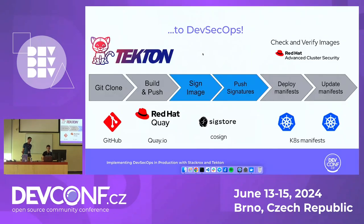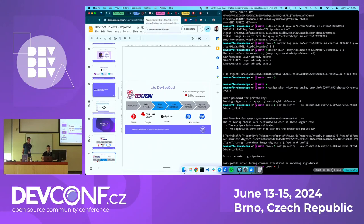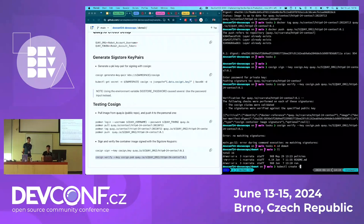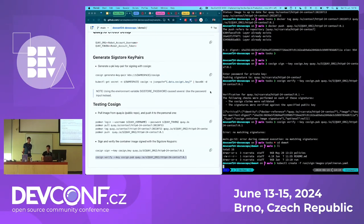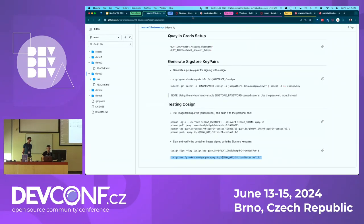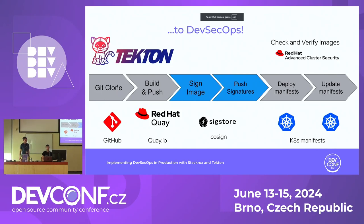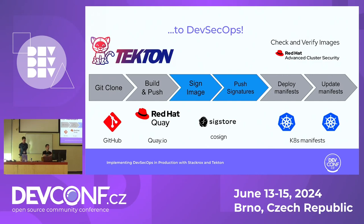Let's see this in action. We go to the command line, head to demo 4, and create a pipeline run. In this pipeline run, you will see all the steps. We will clone our source code, build and push as usual to Red Hat Quay, and implement the DevSecOps steps — signing the image and pushing the signature as we already saw in the previous demo — to prevent anyone from tampering with our images or introducing anything into the supply chain.